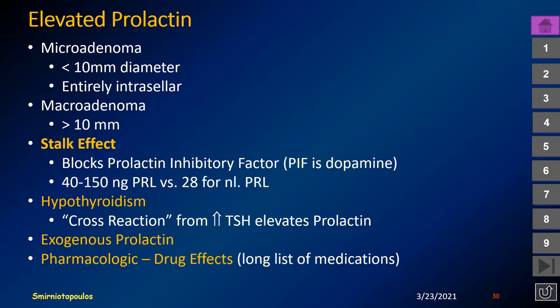Many patients are referred for imaging because of elevated prolactin. This can be caused by a microadenoma or macroadenoma, but may also be the result of the stalk effect. Prolactin inhibitory factor, which is really dopamine, travels down the pituitary stalk from the hypothalamus. The stalk effect may cause serum prolactin elevation up to about 150 or 200 nanograms. Most pituitary adenomas cause elevations outside that range, typically 200, 500, or even 1,000 nanograms. Hypothyroidism, exogenous prolactin, and pharmacologic drug effects can also cause prolactin elevation.